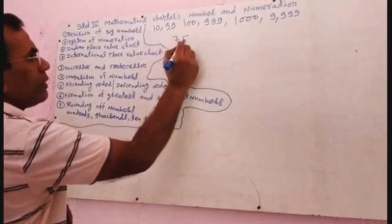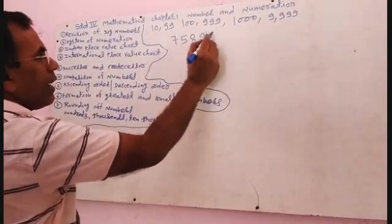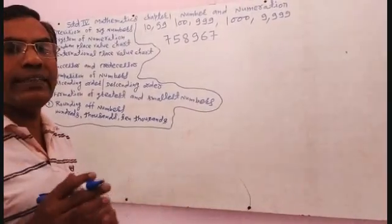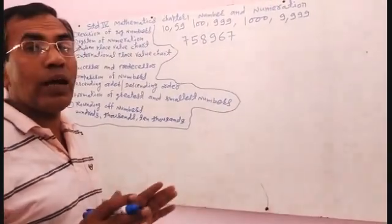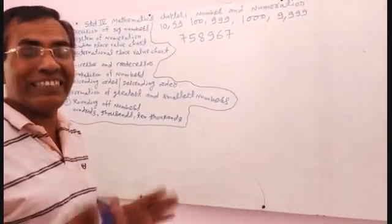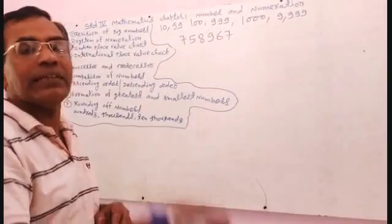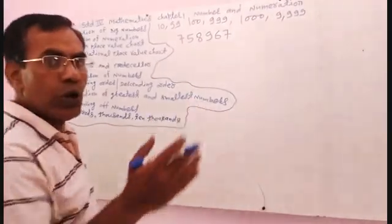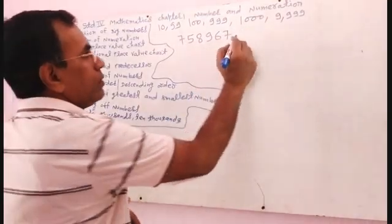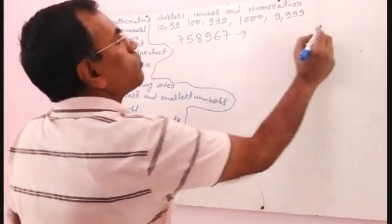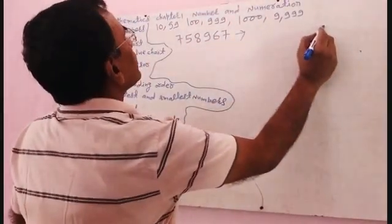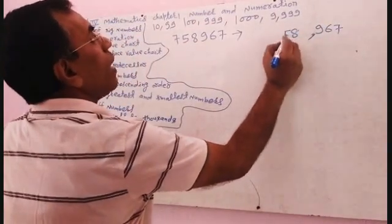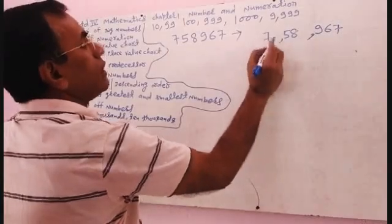If you have been given 7, 5, 8, 9, 6, 7, then you have to arrange according to the Indian place value chart. You write first 3 digits from the right side — 9, 6, 7 — then hit comma, then 8, 5, then hit comma, then 7. So you can read this number as 7, 58, 967.